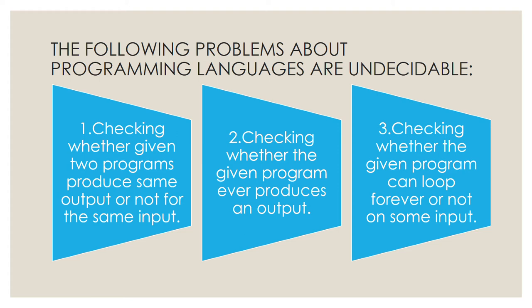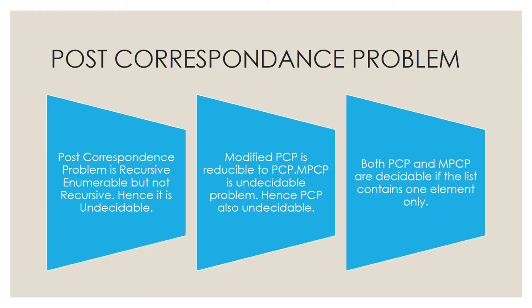Next is the Post Correspondence Problem (PCP). It is a particular kind of problem in which we are given two sets, and we have to form a string by taking ordered pairs from both sets. We need to derive a particular string from both the upper and lower parts, and you can use any pair any number of times. A linked video will be provided for solving PCP questions.